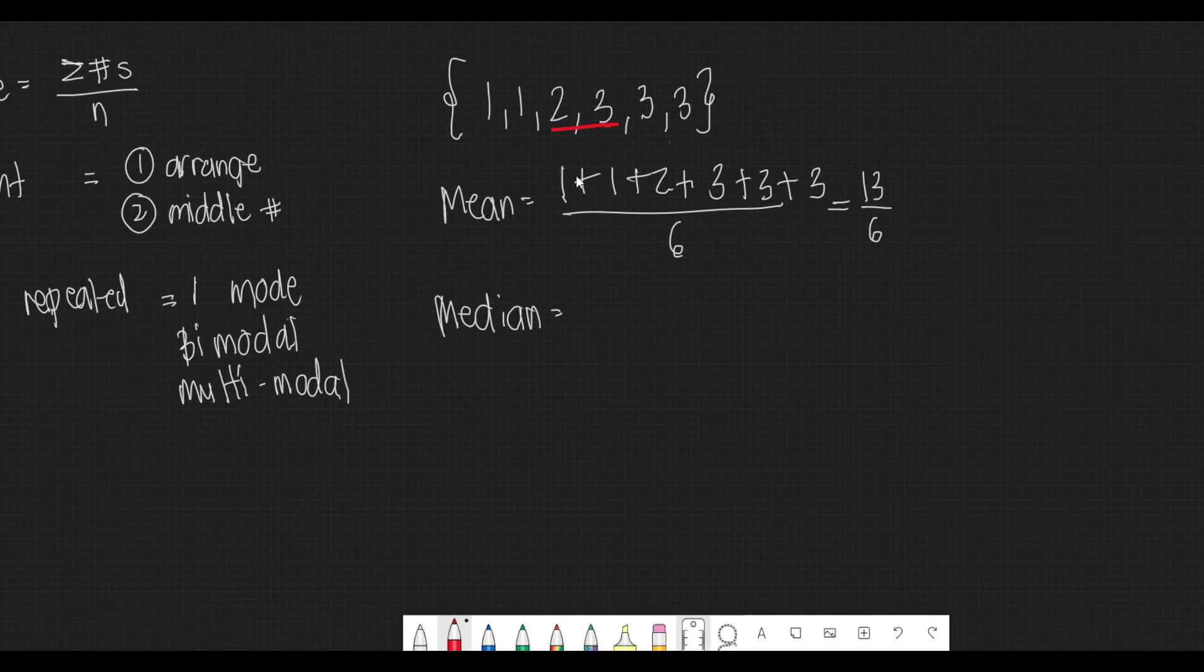So we need to find the average of both of them. 2 plus 3 divided by 2 is equal to 5 over 2, or 2.5. We can observe that 2.5 is the right answer because it's greater than 2 and less than 3. It falls right in the middle of it.